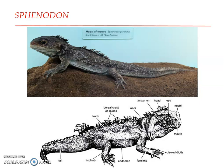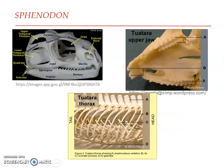Sphenodon forms the only tetrapod with well-developed gastralia or abdominal ribs, also found in living crocodilians. The gastralia are rib-like bones that form a cage on the underside of the abdomen, giving a hard underbelly covering for the abdomen as well as support for the abdominal muscles. The ribs are provided with uncinate processes — these are short projections on the ribs. The presence of uncinate processes and well-developed gastralia is a unique feature of Sphenodon as well as crocodilians.